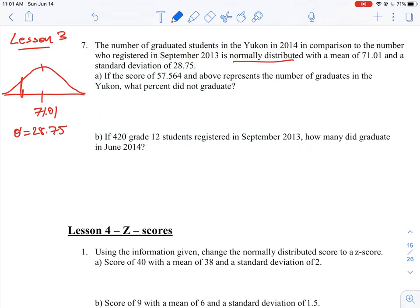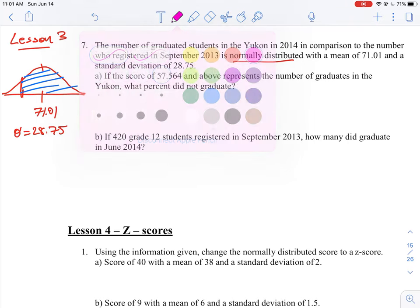If we look at this in terms of a couple colors, anything above the mean is the graduation component, and anything below is the non-graduation component. We know that number is 57.56. So how do we calculate what percent did not graduate?